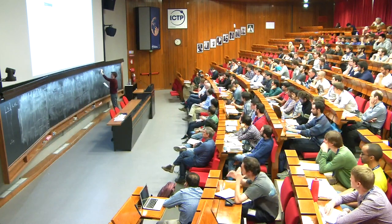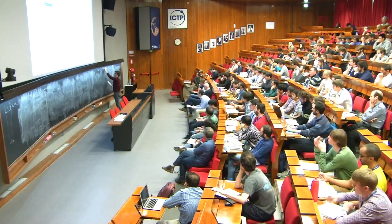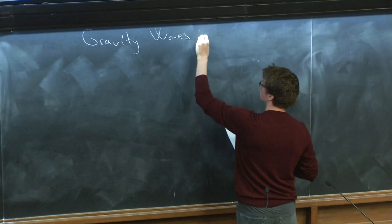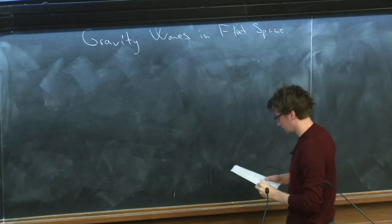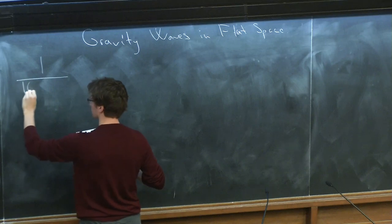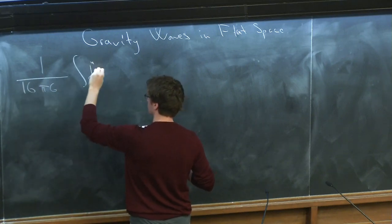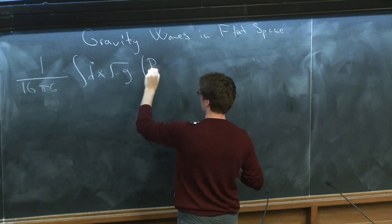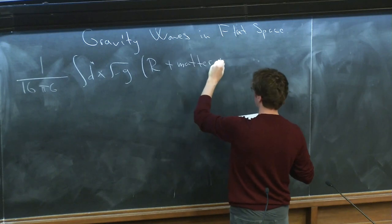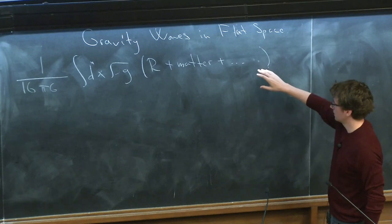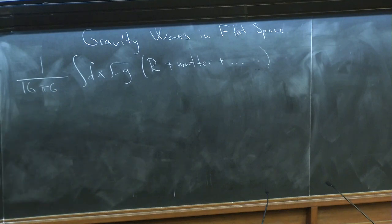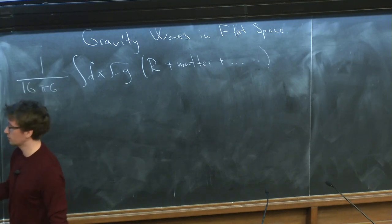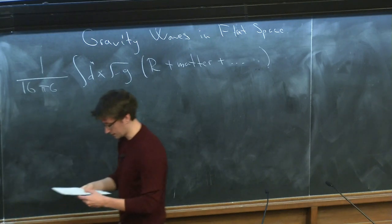Let me discuss gravity waves in flat space. Let me remind you how the Lagrangian in Einstein theory looks. We have curvature plus potentially corrections, matter, and some high-derivative corrections, which I will not care about because they're all irrelevant. You can consider theories with gravity and add high-derivative corrections, but the nice thing about this IR part is that it's pretty universal. Things I will be talking about are pretty insensitive — you can add any high-derivative corrections you like, and it doesn't change the story.